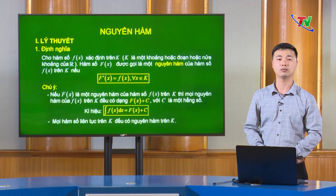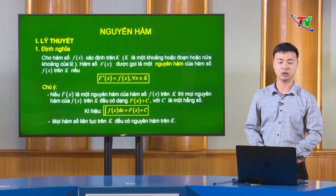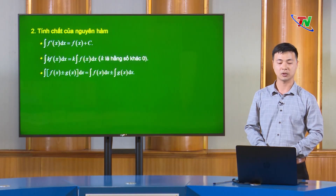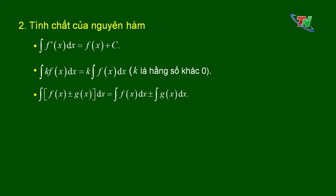Thầy đã nhắc lại định nghĩa và 2 chú ý kèm theo. Tiếp theo là phần tính chất của nguyên hàm, bao gồm 3 tính chất chủ yếu. Tính chất số 1: ∫f'(x)dx = f(x) + C. Tính chất số 2: ∫k·f(x)dx = k·∫f(x)dx với k là hằng số khác không — tính chất này giúp đưa hằng số k ra ngoài dấu nguyên hàm. Tính chất số 3: nguyên hàm của tổng/hiệu hai hàm số bằng tổng/hiệu của hai nguyên hàm, có thể mở rộng cho nhiều hàm số.